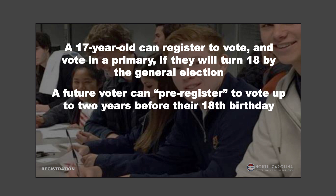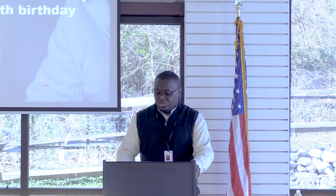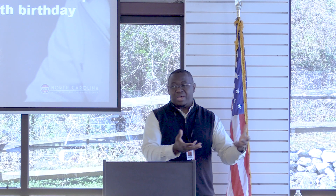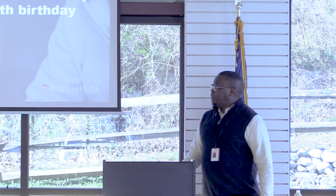Future voters — 16 and up — can pre-register. This helps capture voters as they get their driver's licenses at 15 or 16. When they go to the DMV, they'll be asked if they want to register to vote and can pre-register. The registration is held by the Board of Elections, and when they turn 18, it becomes active and they can start voting. For the current year, anyone turning 18 before November 5th can register and vote in November.